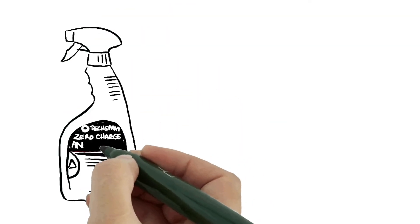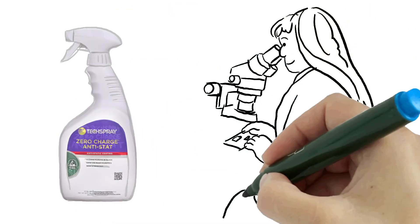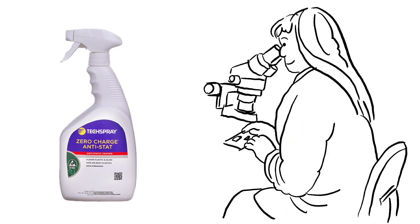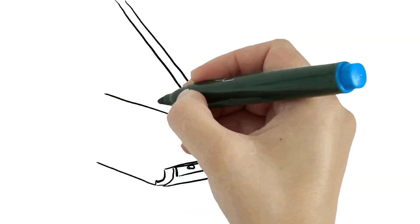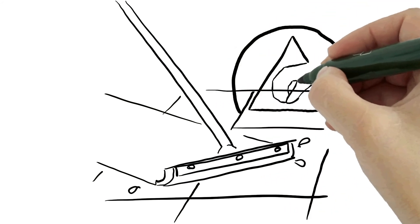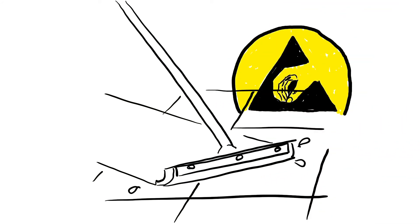Techspray Anti-Stat is more for flexible surfaces like carpet and fabrics. We even have a floor coating to convert any sealed surface to an ESD-safe one or rejuvenate an existing ESD-safe floor.